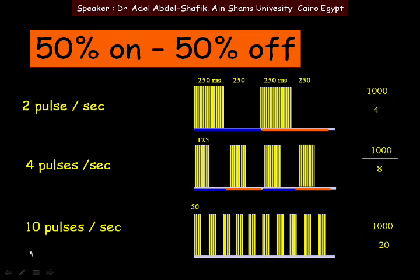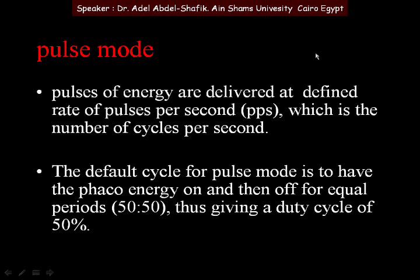Regardless of the number of pulses, in the whole second 50% of the time is on and 50% is off — it doesn't matter how many pulses are set. The pulse mode delivers pulses of energy at a definite rate of pulses per second. The default duty cycle for pulse mode is 50% on and 50% off.